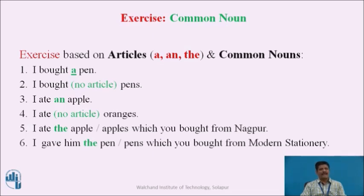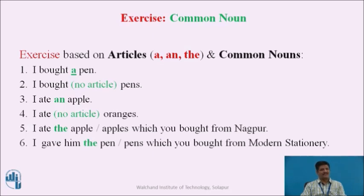In sentence 4, 'I ate oranges' — the common noun 'oranges' takes no article because the reference is indefinite, so we cannot use 'the,' and since 'oranges' is plural, we cannot use 'a' or 'an' either. In sentence 5, 'I ate the apple/apples which you bought from Nagpur' — the reference to the noun is definite, particular, and specific, so we use the definite article 'the,' which can be used with both singular and plural nouns.